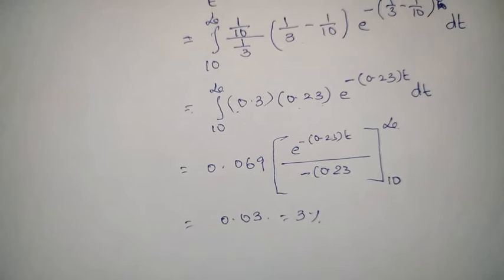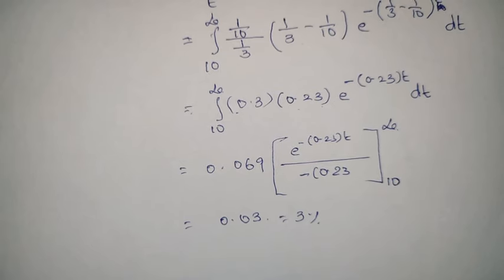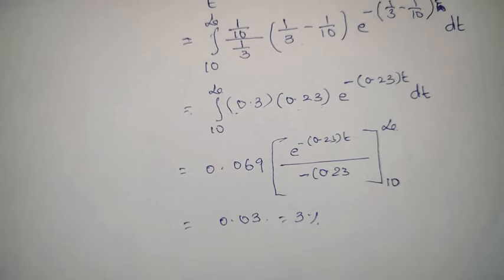In 100% of cases, there is only a 3% chance the customer will wait more than 10 minutes. This is how we solve realistic problems using queuing model relationships. Please like this video, subscribe to the channel, and share the video. Thank you.